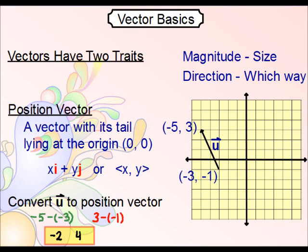That gives us negative 2 and 4. So the way we would write this is negative 2i plus 4j, or we would just simply write negative 2 comma 4 bracketed by arrows.